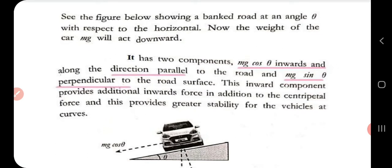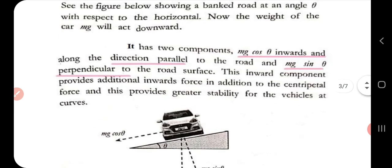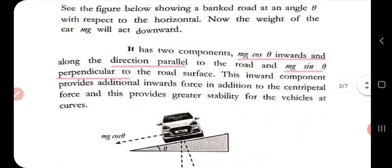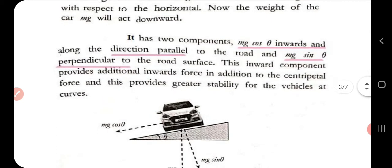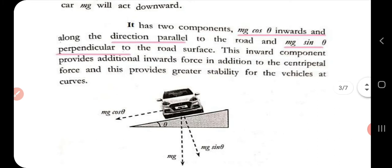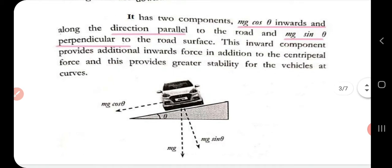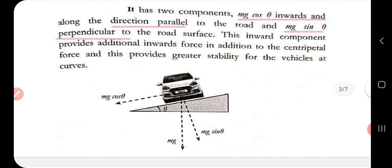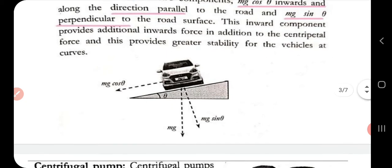As shown in the figure, a road is banked at an angle theta with respect to the horizontal. The weight of the car, mg, acts downwards and is resolved into two components: mg cos theta, which acts parallel to the road, and mg sin theta, which acts perpendicular to the road. The inward component mg cos theta, along with the centripetal force, provides the stability needed for the car to move along the road without skidding.